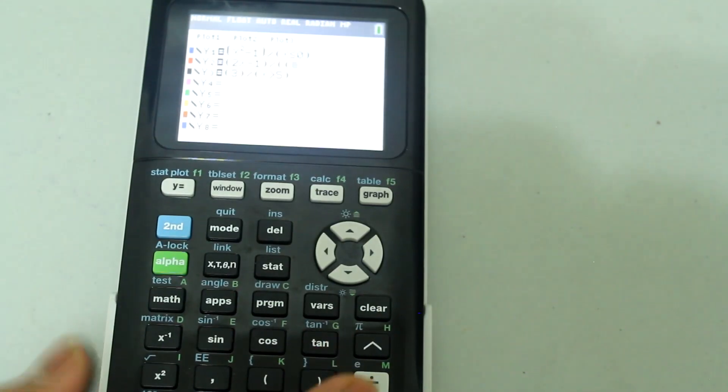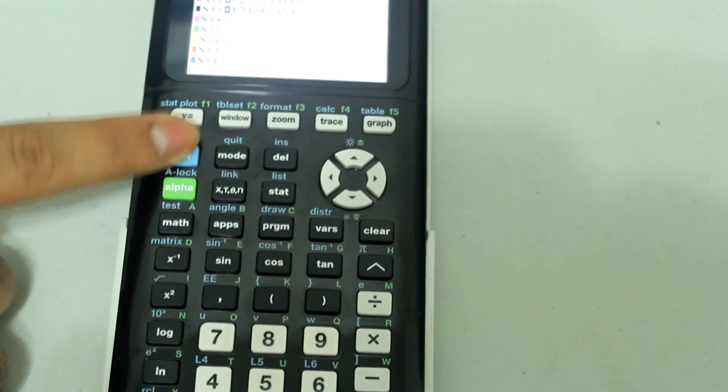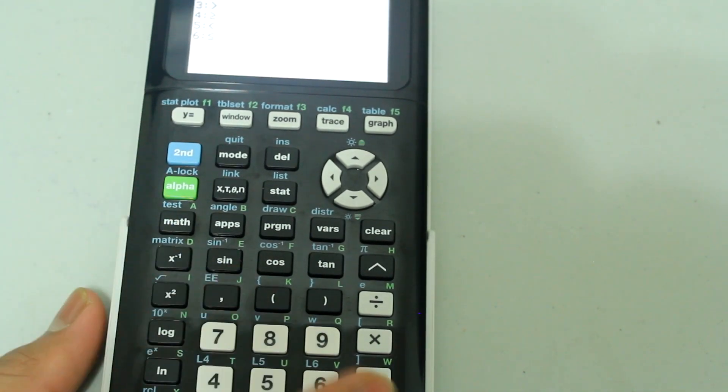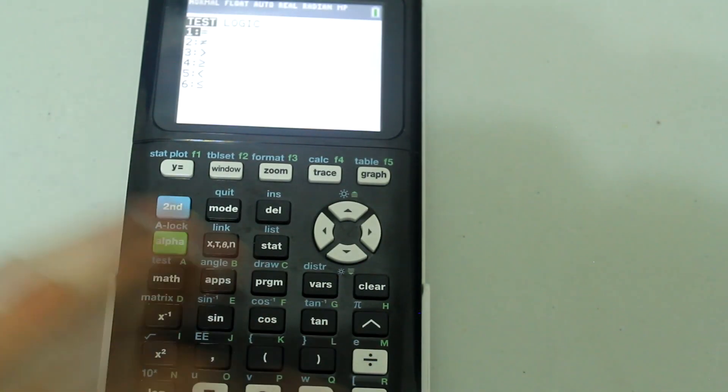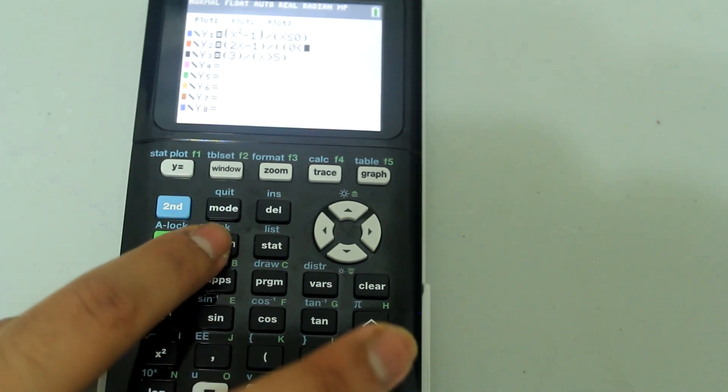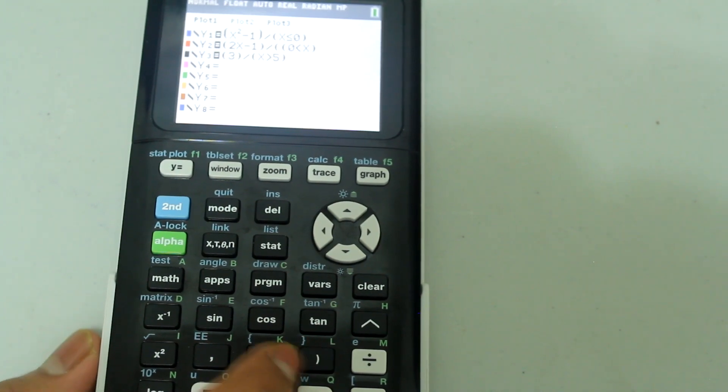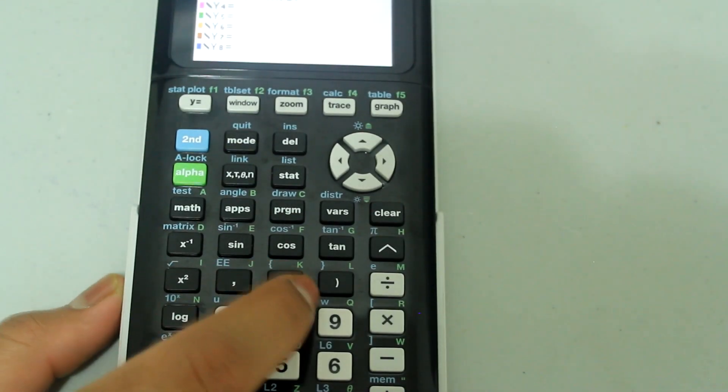I'm going to open a parenthesis, open another one, so I have two right now. And then I'm going to type in 0, second, test, number 5. And I'm going to press x now and close that parenthesis.